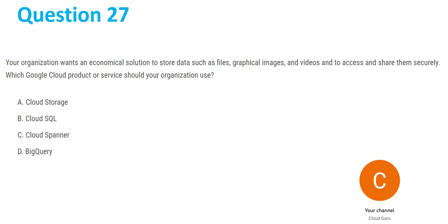Let's move on to question 27. Your organization wants an economical solution to store data such as files, graphical images, and videos, and to access and share them securely. Which Google Cloud product or service should your organization use? The keyword here is 'store data.' We know that Cloud Storage stores data, so that is clearly our answer. For question 27, Cloud Storage is the answer.